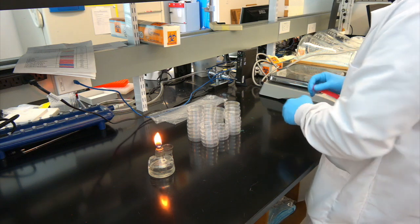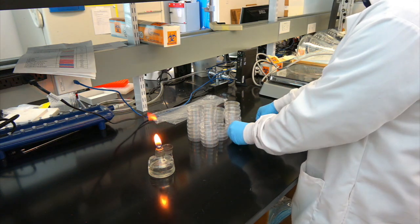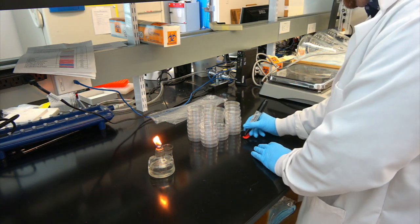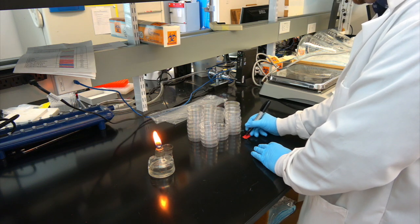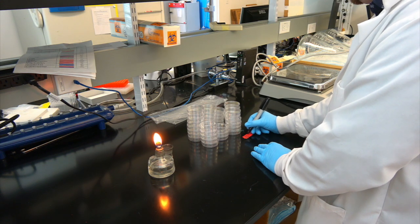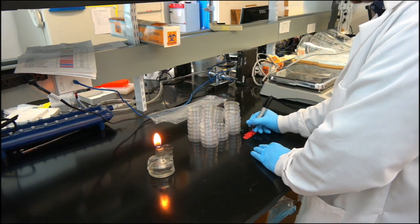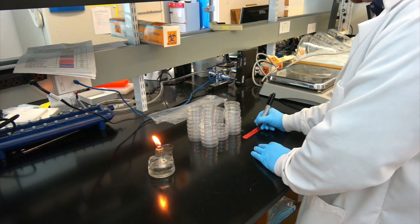Now we label our plates with the medium and the antibiotic they will contain. We recommend using a batch labeling system to speed up this process. For instance, we simply label our bags instead of our plates. If you label your plates in more detail, be sure to write on the bottom of the plates instead of the top.